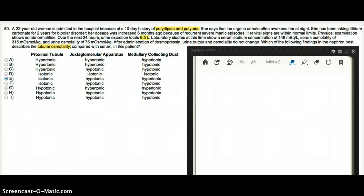Which of the following findings in the nephron best describes the urine tubular osmolarity compared with serum osmolarity in this patient? So first of all, what is happening here? This patient is taking lithium, and six months ago the lithium dose was increased. And now she's having polyuria and polydipsia.